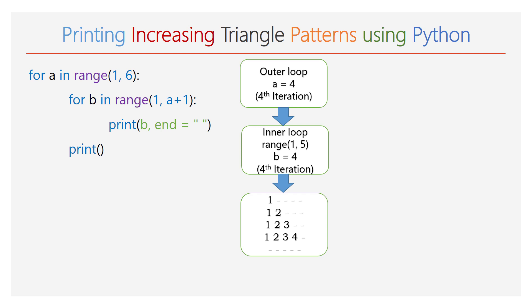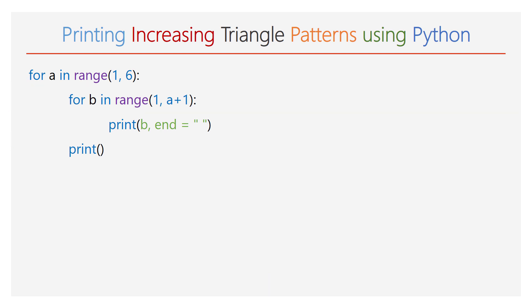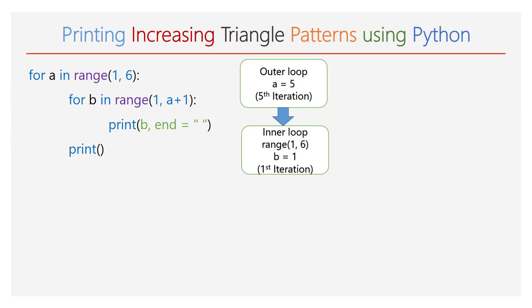In the fourth line, you can observe the numbers 1, 2, 3, 4 are printed. Next, the empty print function is executed and the cursor will take a new line. Again, the execution will go to the outer for loop. The value of a will be 5 now.